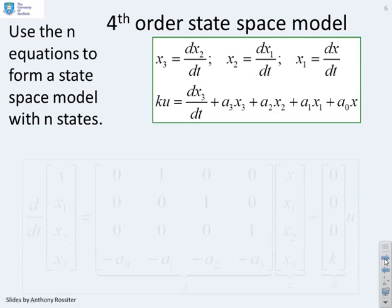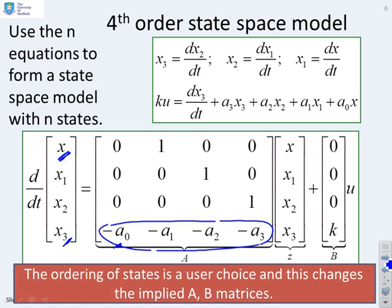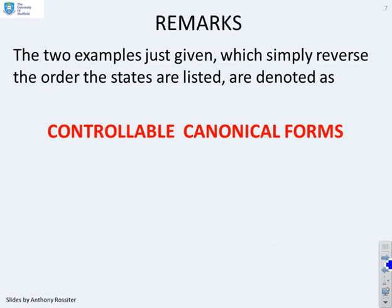Now just a reminder that canonical forms can come in different fashions. Here you'll notice that what I've done is I've ordered the states in the opposite direction. I've now put x at the top and x3 at the bottom. And you'll see as a consequence, these A's now come in the bottom row. And the A0 is now in the first column rather than the last column. But otherwise, it's an equivalent transformation. So the reminder here is that the ordering of states is a user choice. And this changes the implied A or B matrices.